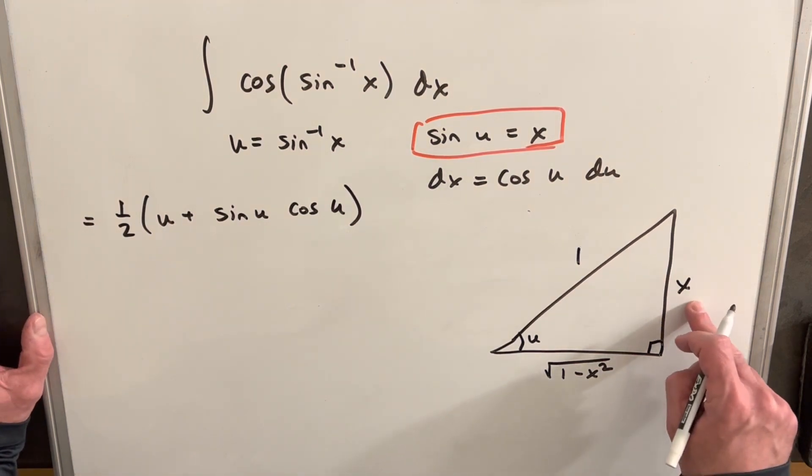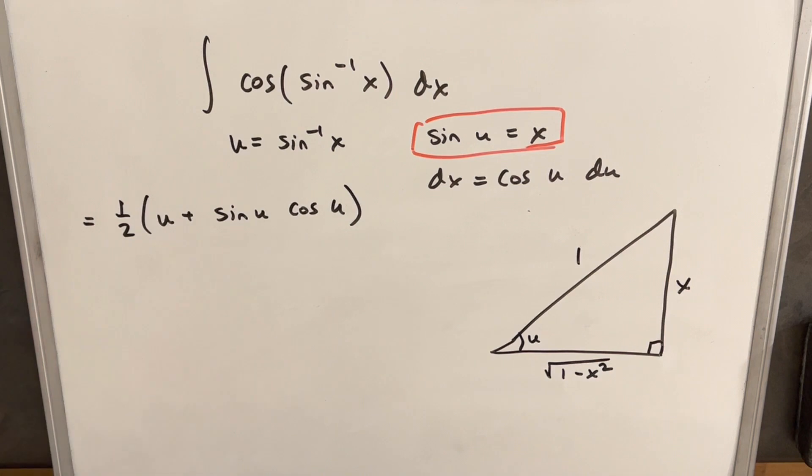Just noticing if we square this, square this, we get this squared. But 1 squared is just 1. So from this we're going to be able to find cosine u, because cosine is just adjacent over hypotenuse. So our cosine of u is just going to be square root of 1 minus x squared.